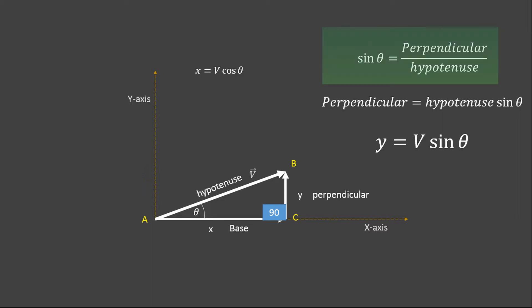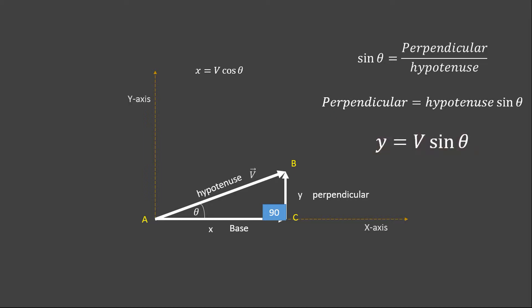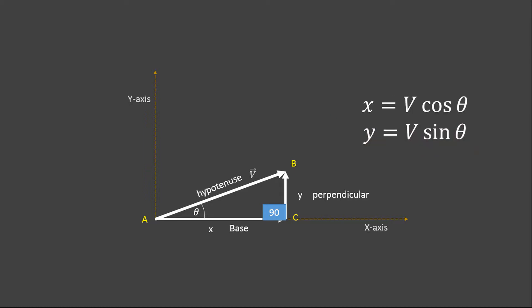Similarly, for the y-component we will use sine theta. We know that sine theta is equal to perpendicular divided by hypotenuse. Solving this, we have y equal to V sine theta. So the components of vector V are: x is equal to V cos theta, and the y-component is y equal to V sine theta.